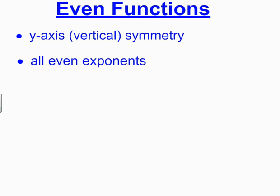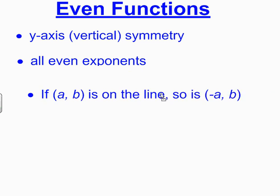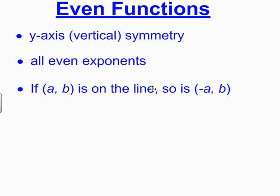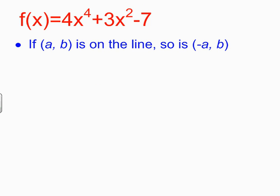It is a characteristic of even functions to have y-axis or vertical symmetry, to have all even exponents, and also, if you choose a point on the curve, a comma b, then the point negative a comma b must also be on that curve. So if I want to use this characteristic to test this function, I'm going to need to first choose a point, a comma b.